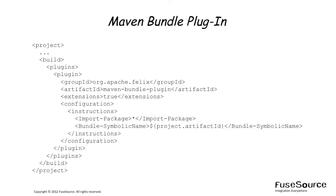A bundle must declare all of its external dependencies by listing the relevant Java packages in the import packages header. Because it would be extremely impractical to create the list of import packages by hand, Maven provides a bundle plugin which is capable of generating the import packages header automatically. The wildcard character in the import package instructions instructs the bundle plugin to scan the bundle's Java source code and add any package dependencies it finds.